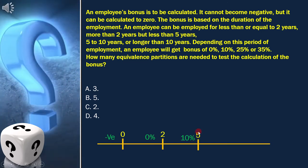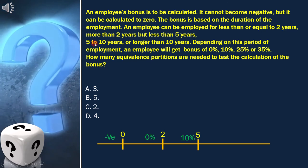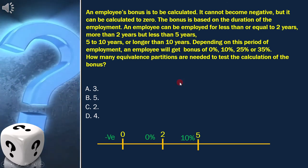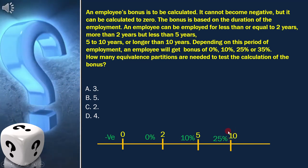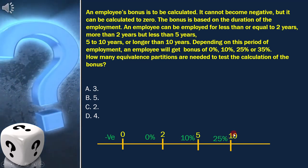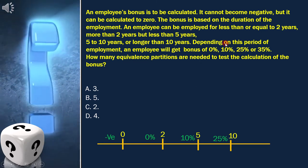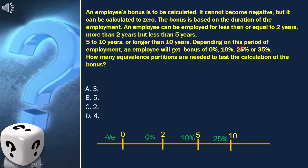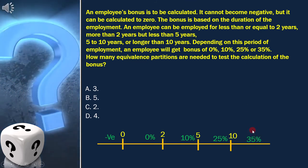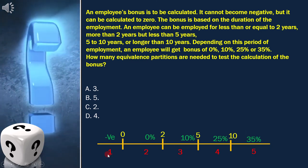The next condition is five to ten years or longer than ten years, giving us ten as one of the boundaries. We then have bonus values of zero percent, ten percent, twenty-five percent, and thirty-five percent respectively. With this, the equivalence partition diagram is ready.